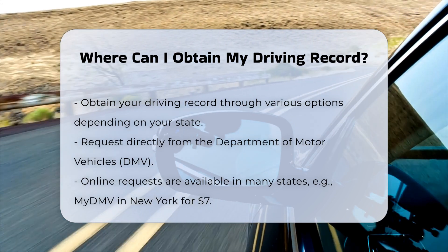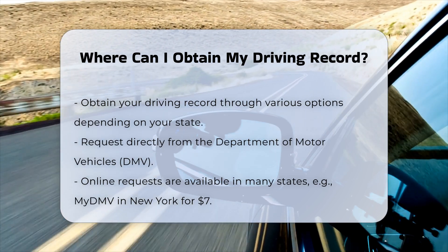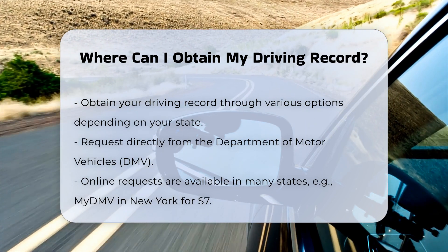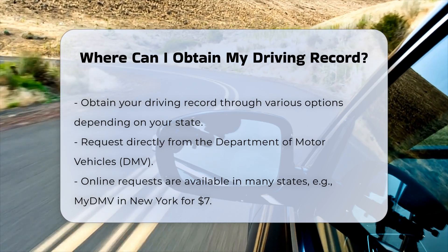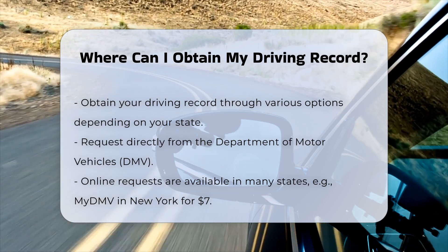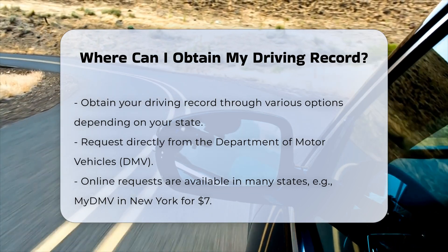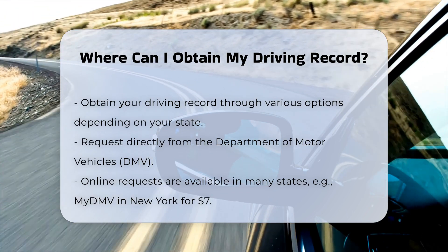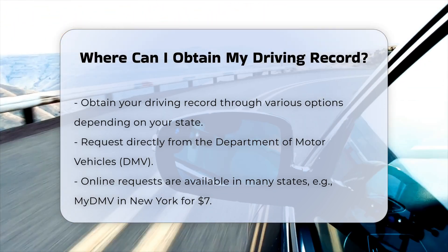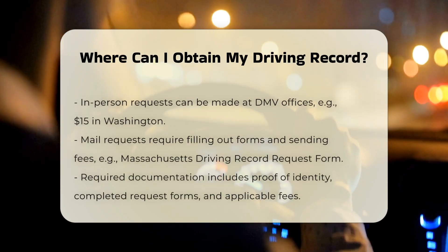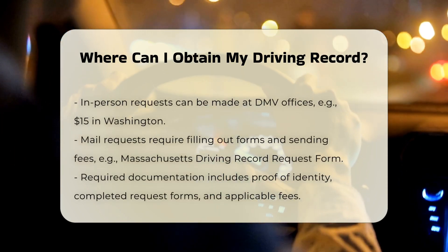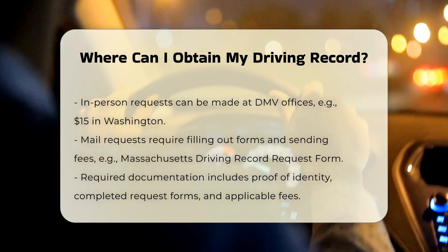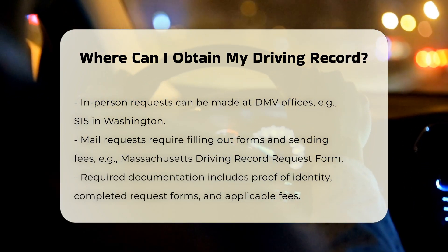In person, you can visit a DMV office in your state. In Washington, for instance, you can buy a copy of your driving record at a driver licensing office for $15. By mail, fill out the required form and mail it to the DMV. In Massachusetts, you need to complete a driving record request form and send it to the Registry of Motor Vehicles along with the applicable fee.